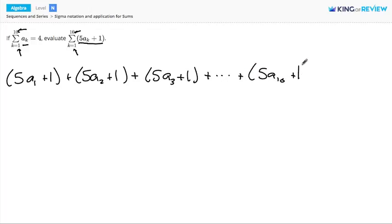Now notice, these terms are all very similar. They all have 5 times the next term, a1, a2, a3, up to a10. So I'm going to factor out a 5 from these terms.